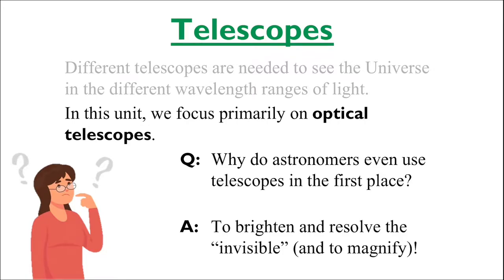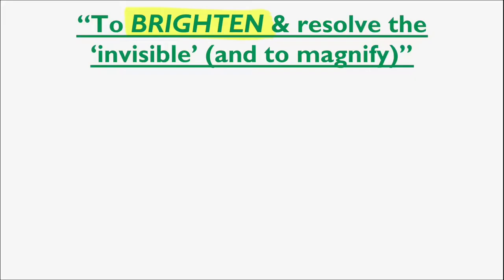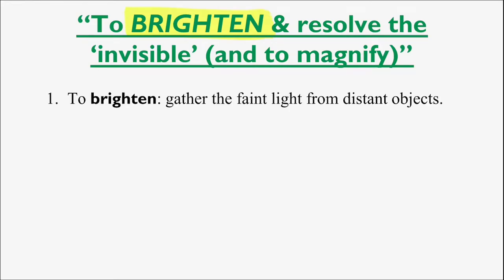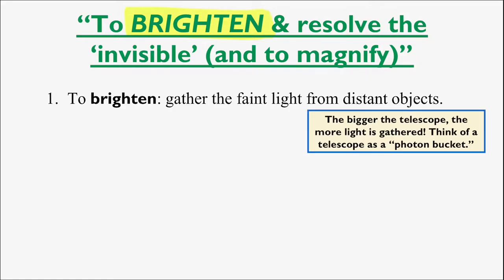But what does it mean to brighten? When observing the night sky, objects that are extremely far away may seem extremely dim. Telescopes can brighten this dim light by gathering so much more of it than our own eyes can. In fact, the bigger the telescope, the more light is gathered. Think of the telescope as a photon bucket.